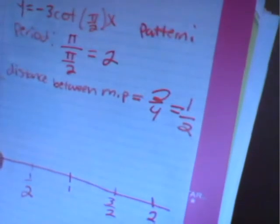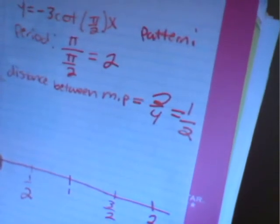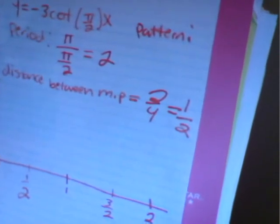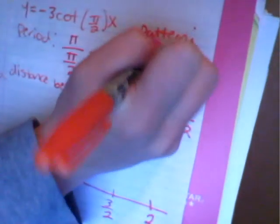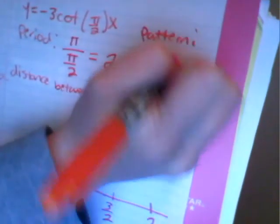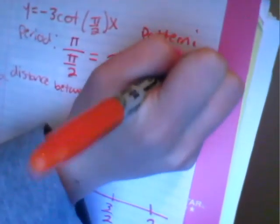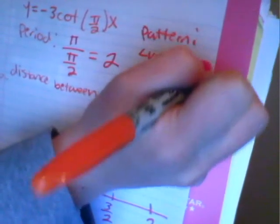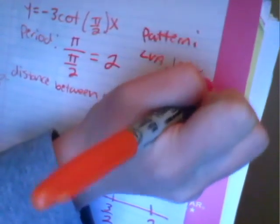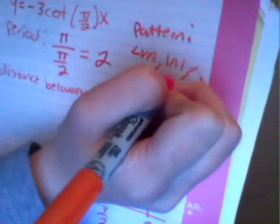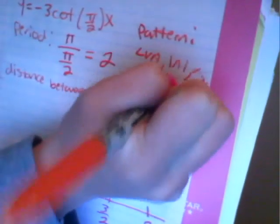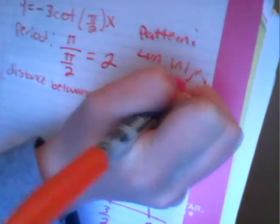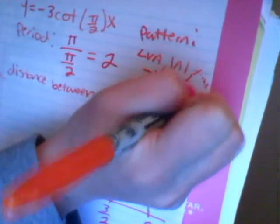The pattern for a cotangent is: left vertical asymptote, absolute value of a, x-intercept, the negative absolute value of a, and right vertical asymptote.